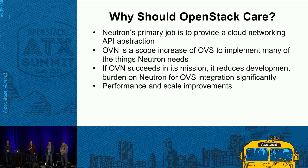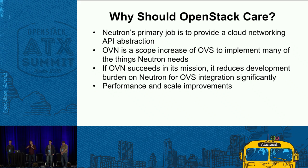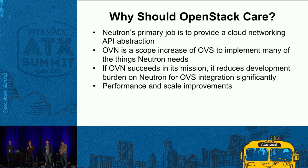Why should OpenStack care? The primary job of Neutron is to provide a cloud networking API, and we want to clean that up and make it work better than existing solutions. We're adding OVN into OVS as a co-located but separate project — we're not baking anything OVN-specific into OVS, but we are expanding OVS in ways that make this easier. Other projects like Dragon Flow are also making use of some of these features, and the design seems to have better performance at scale.